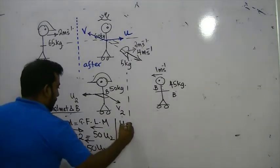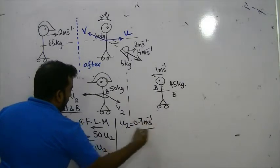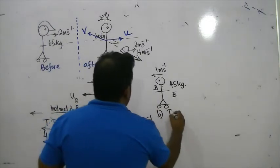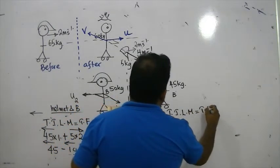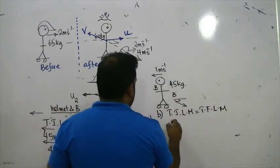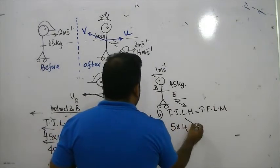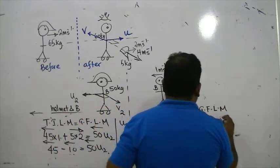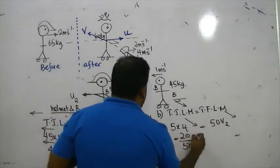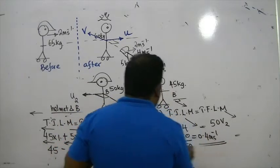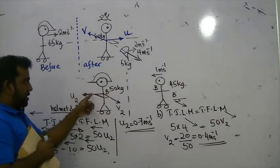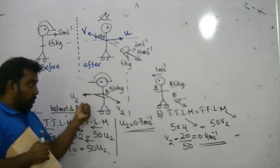So U2 is 0.7 meters per second. Then applying conservation in the perpendicular direction: initial momentum is 5 × 4, final momentum is 50 × V2. So 20 = 50 V2, giving V2 = 20/50 = 0.4 meters per second. Both velocities are now found — U2 in the original direction of motion and V2 in the perpendicular direction.